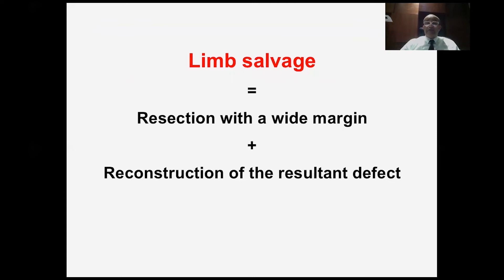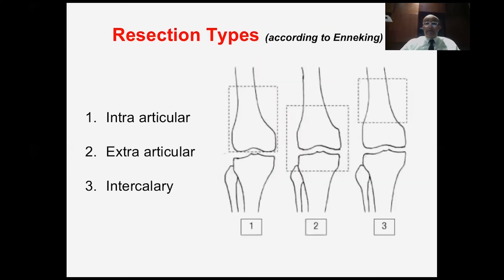Limb salvage is composed of two components: resection with a wide margin and the reconstruction of the resultant defect. The types of resection are either intra-articular — when we go through the joint and remove the distal femur or proximal tibia — extra-articular, where we remove the tumor together with the adjacent joint when there is intra-articular extent, or intercalary resection when the tumor is in the middle of the bone and our resection is away from the joint.